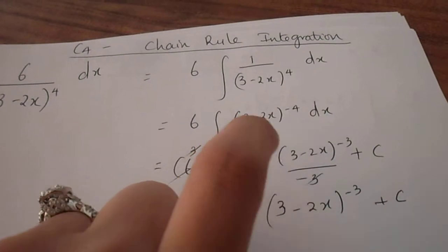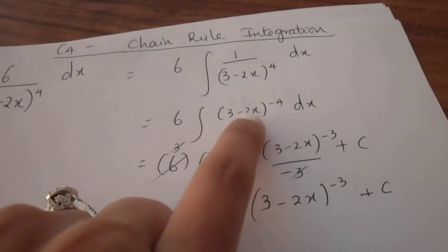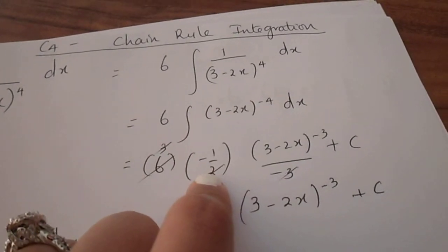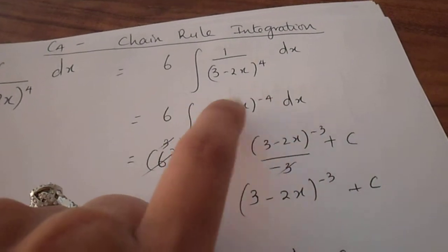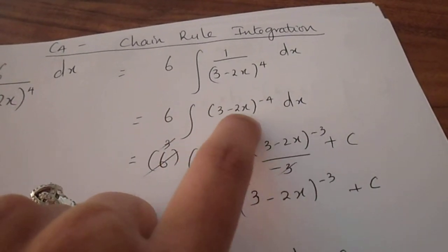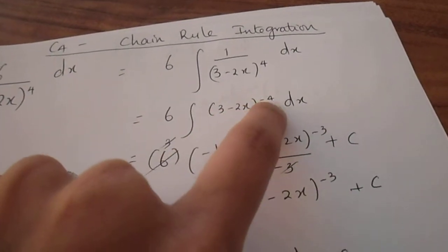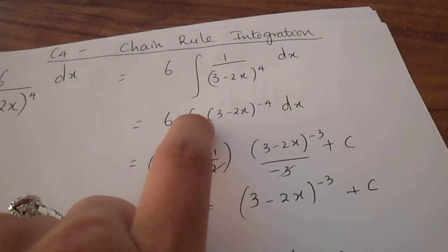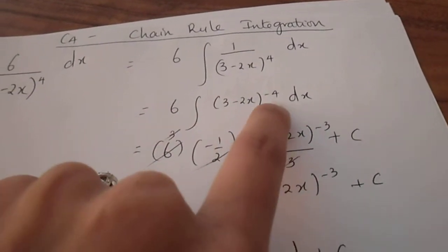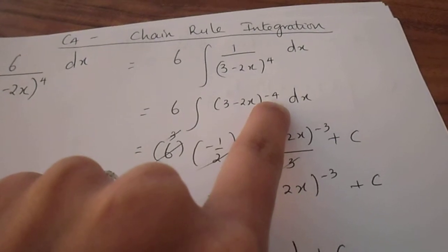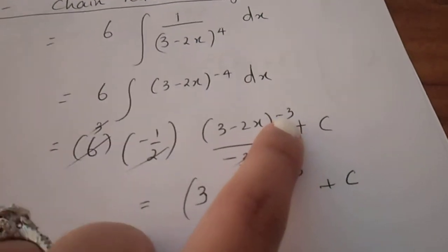Because you are integrating, you must reciprocate the derivative. So minus 2 becomes minus half. The next step is to integrate the overall function. Whatever is inside the bracket remains the same. You work with the powers. The power minus 4 gets up by 1 when integrating and becomes minus 3.